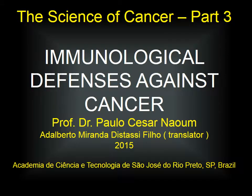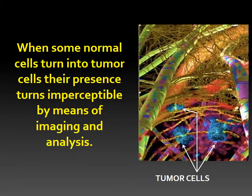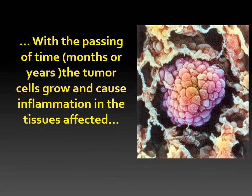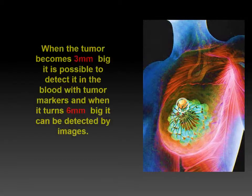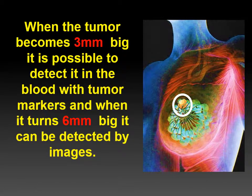The science of cancer, part 3: immunological defenses against cancer. When some normal cells turn into tumor cells, their presence is imperceptible by means of imaging and analysis. With the passing of time — months or years — the tumor cells grow and cause inflammation in the tissues affected. When the tumor becomes 3mm big, it is possible to detect it in the blood with tumor markers, and when it turns 6mm big, it can be detected by imaging.